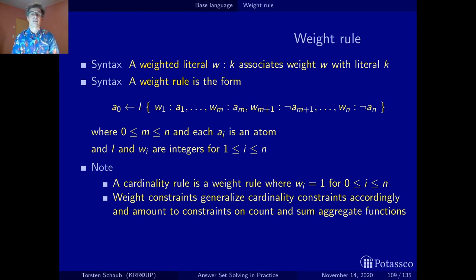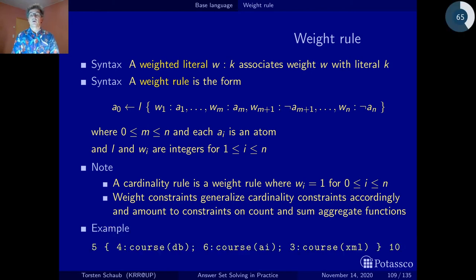Here is last but not least an example of a weight constraint that may appear in the head or in the body. We may select courses and each of the courses gives us a credit: database gives us 4, AI gives us 6, XML gives us 3. We have to achieve at least 5 credits and at most 10 credits.